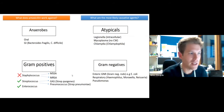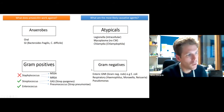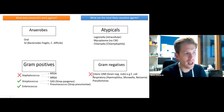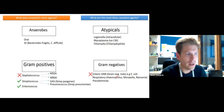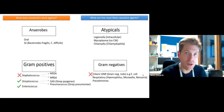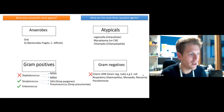What about the gram negatives? Amoxicillin won't work against the enteric gram-negative rods, because many of these — like E. coli — also have a beta-lactamase, allowing them to effectively detoxify the antibiotic.